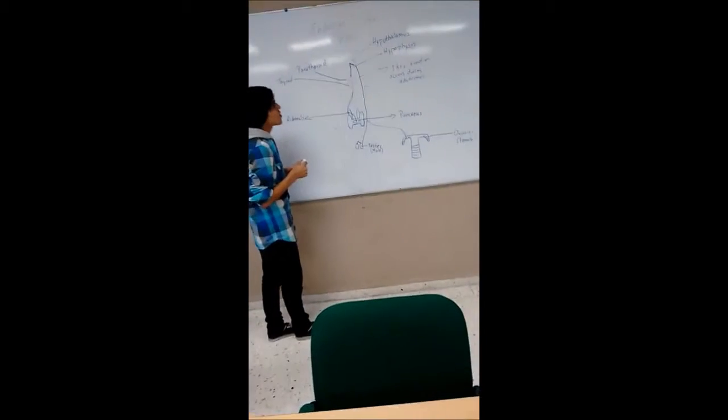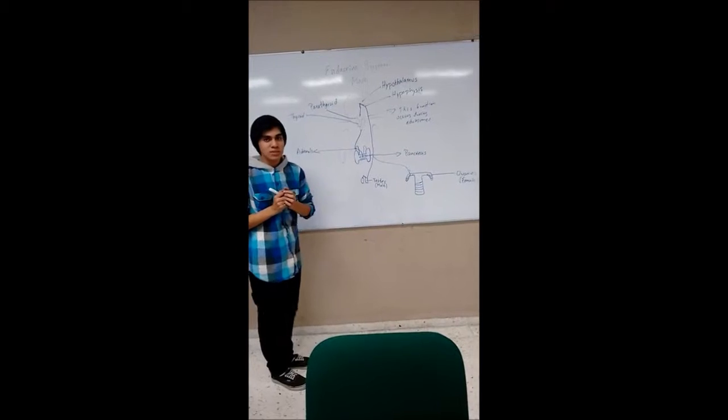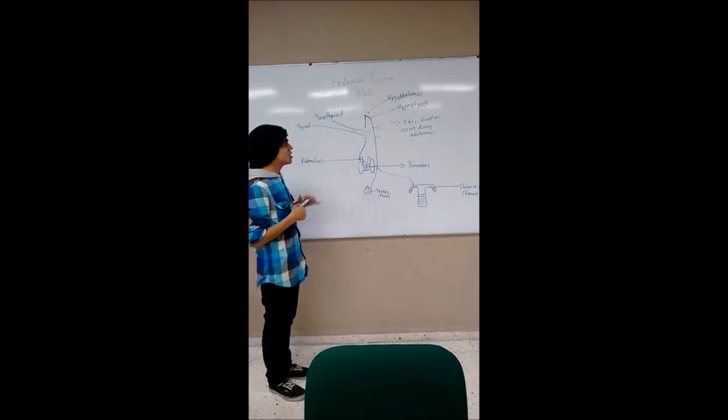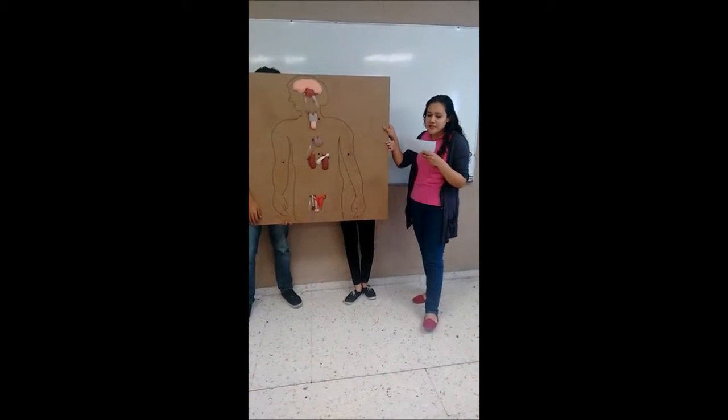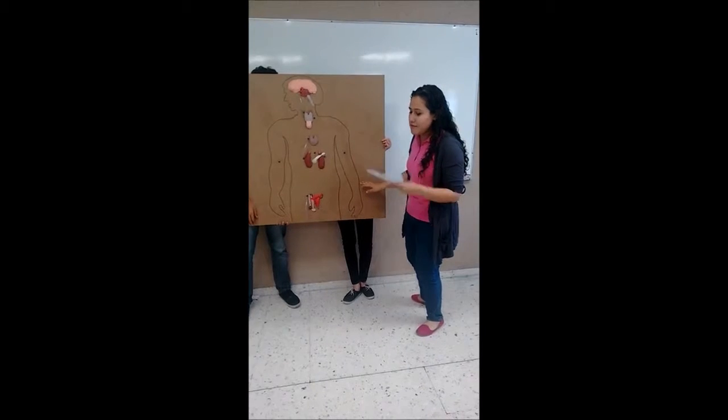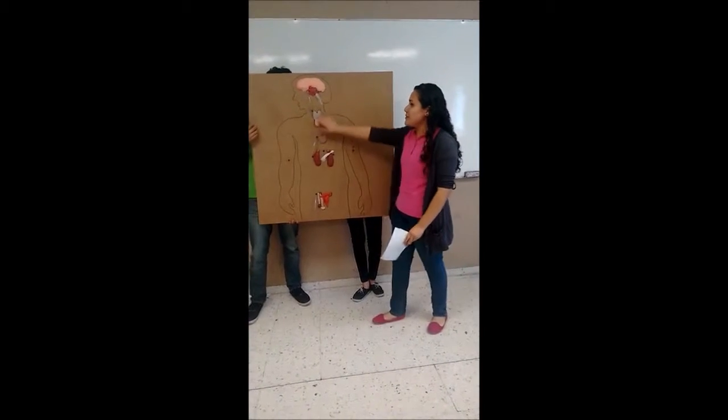For the last part, this is our endocrine system model and this is the diagram. The wood is the base of the model because here we draw the human body with the organs involved in the endocrine system, and we also put the hose.